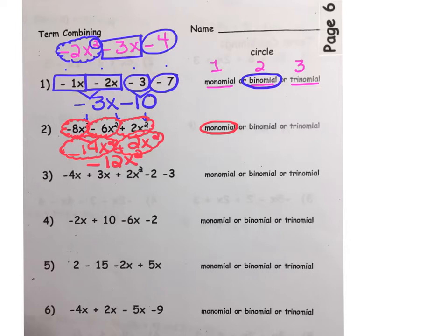Let's try the next one together. Number 3. First, let's put a cloud around our x squared term. That's the only x squared term in the expression. Now let's move to boxing in our x terms. Make sure you grab the sign as you box each term. And then circle the constants.